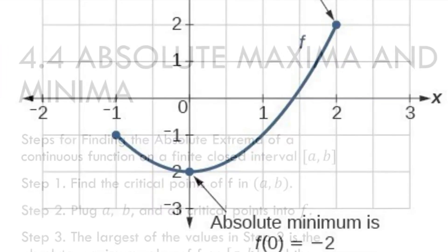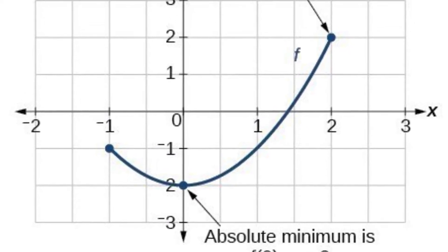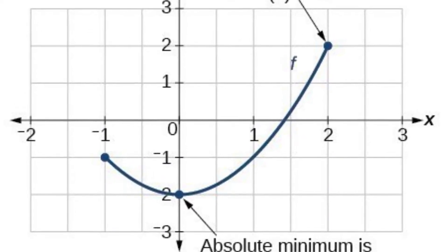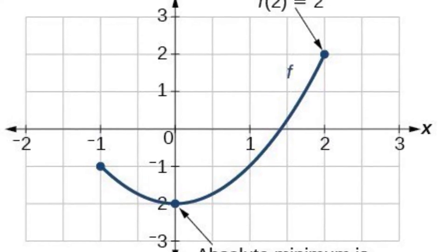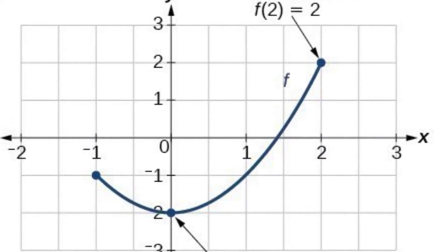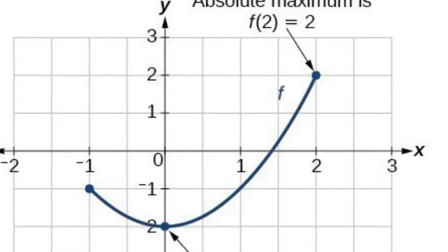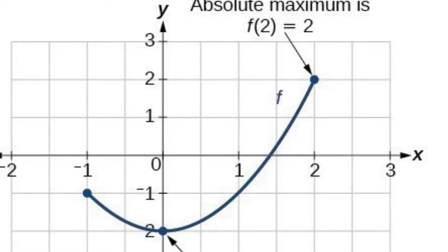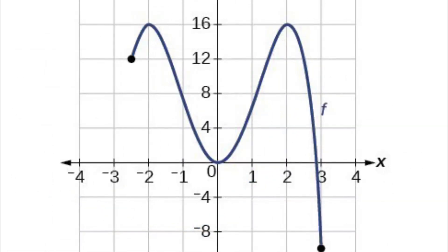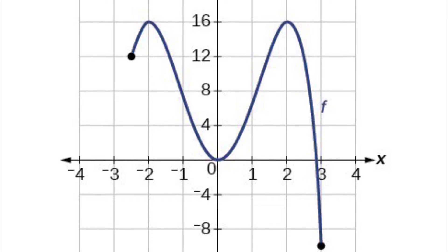Looking at a picture, the absolute minimum exists at the bottom of a parabola. The absolute maximum is the point all the way to the top right, which is (2, 2). Looking at this next picture, you have two absolute maxima — that's very possible — and your absolute minimum exists all the way on the bottom right.